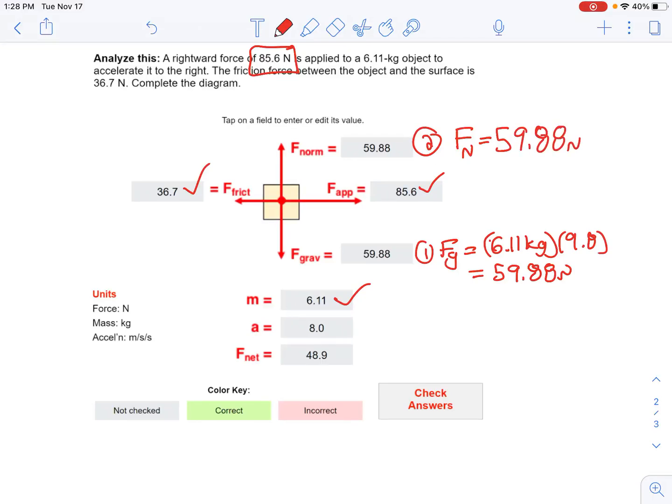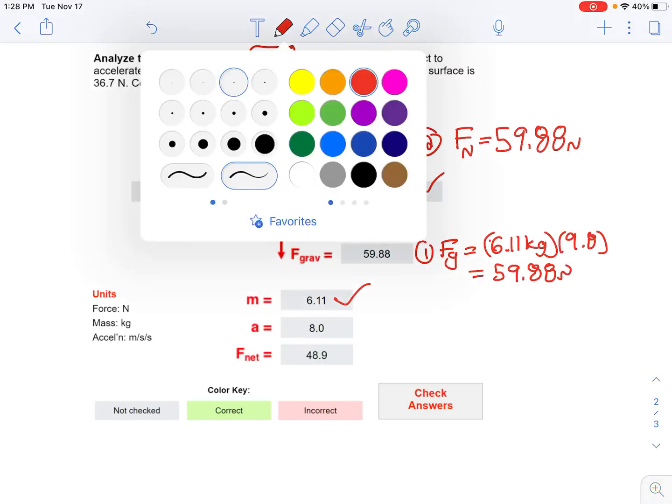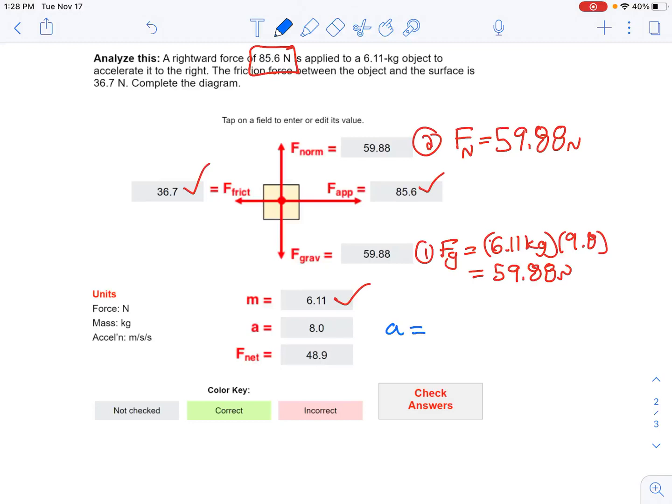The next step is to figure out the acceleration. The net force is a little different than the previous one, but it would be 85.6 Newtons to the right minus 36.7 Newtons to the left, over the 6.11 kilogram mass. And that comes out to be 8.0 meters per second squared. What I should have done first is this—I apologize—that's this quantity up here, but that's how you pull that all together.